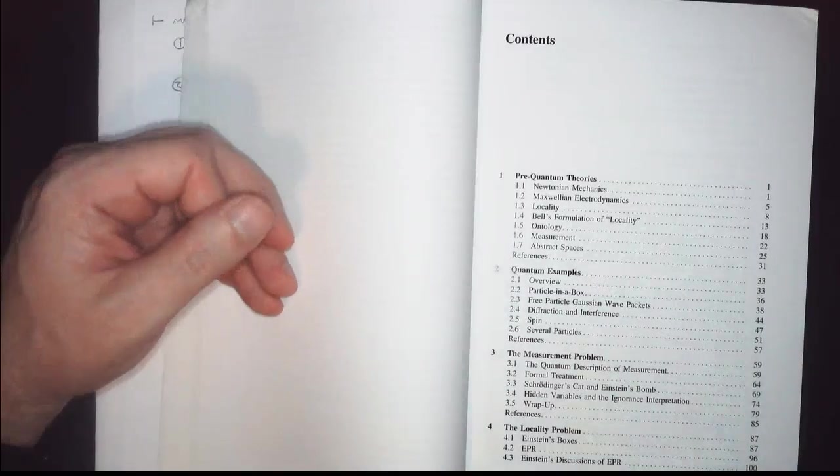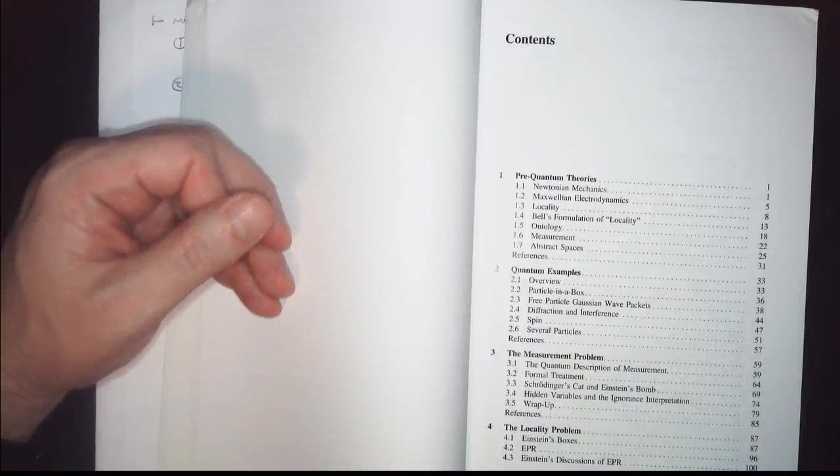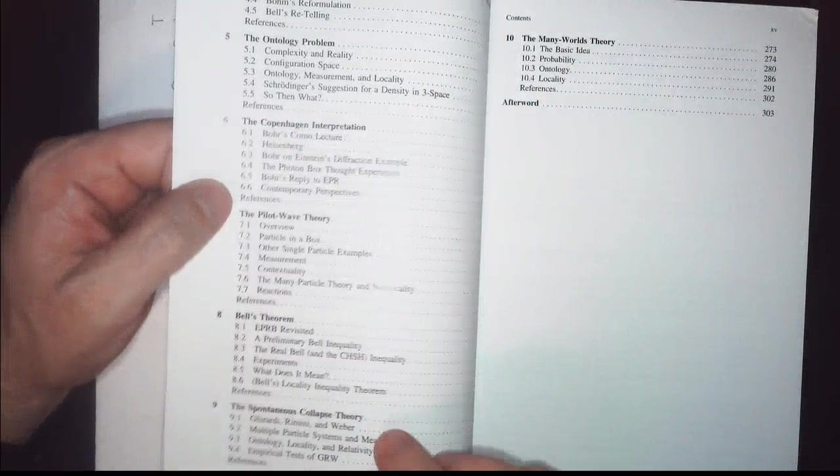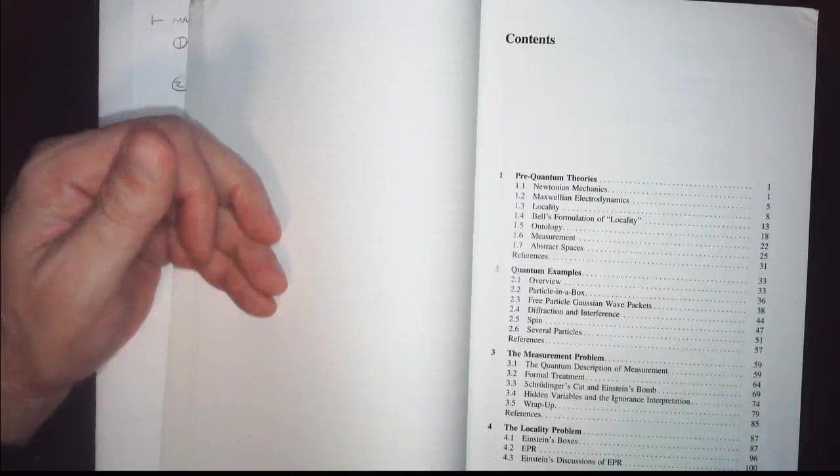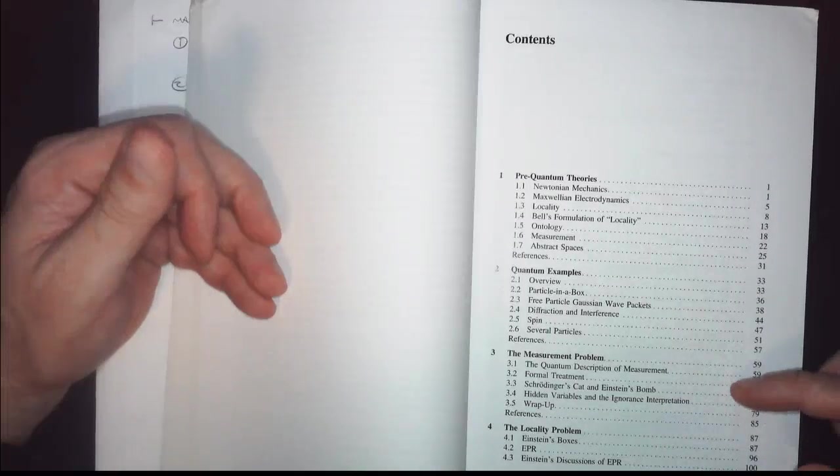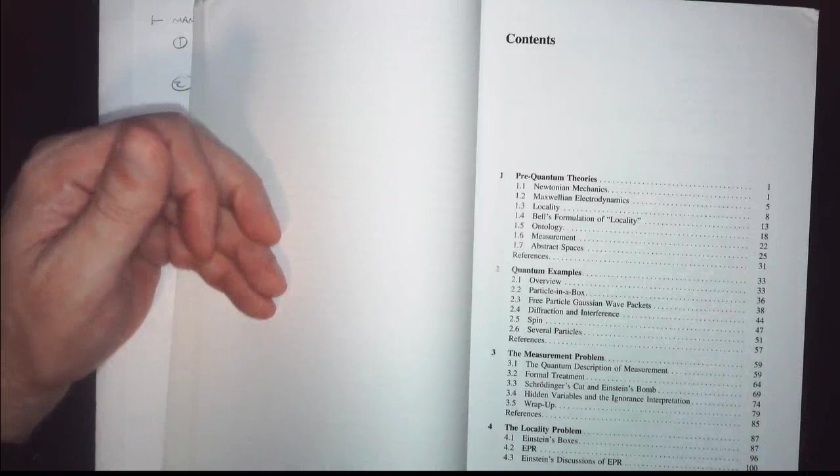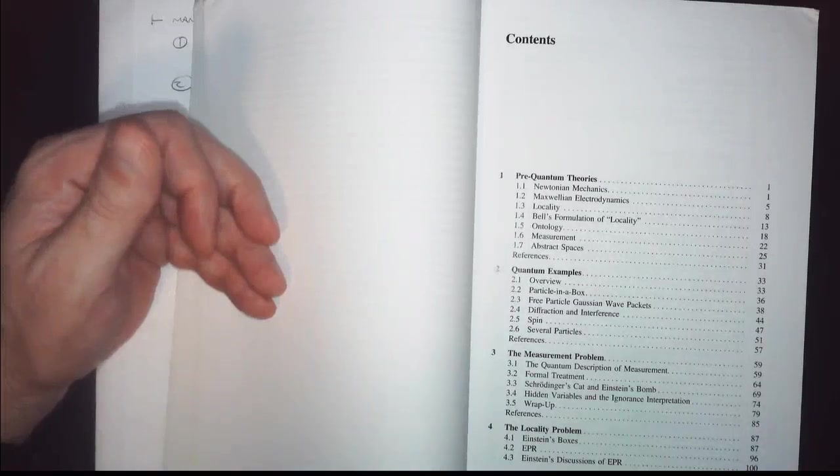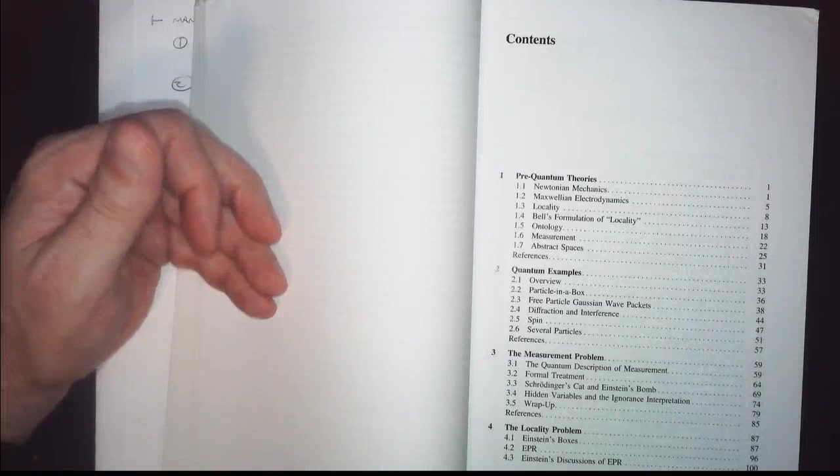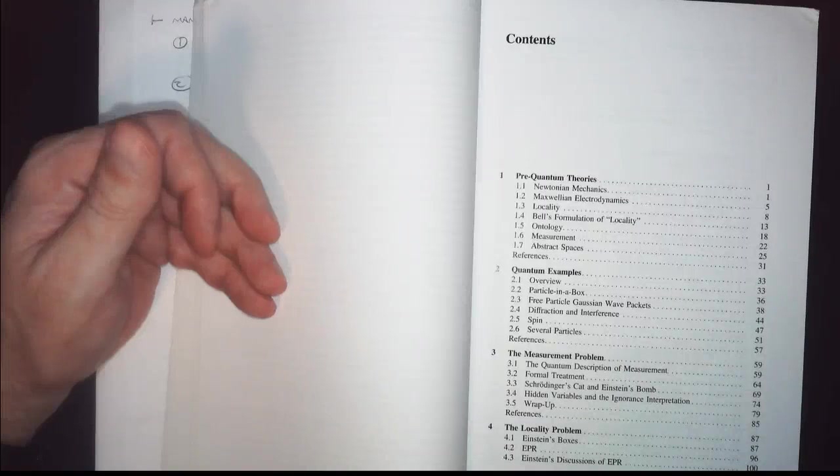Then we get into the measurement problem. That's the first big issue with quantum mechanics is what does measurement mean? And so having something directed like this on the measurement problem, one whole chapter on the measurement problem, one chapter out of 10. So this is, let's say this is a quarter long course, that's a week, is the measurement problem. You're talking about Schrodinger's cat and Einstein's bomb. I think that's the Mach-Zehnder interferometer, I'm not sure. No, that's not the Mach-Zehnder interferometer, that's something else actually. But you're getting in here trying to figure out what it actually means to measure something, because measurements in quantum mechanics are hugely important.